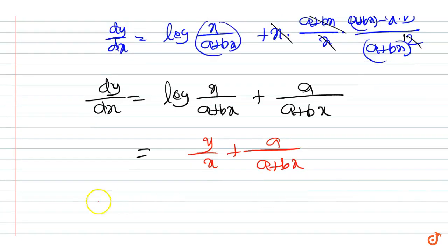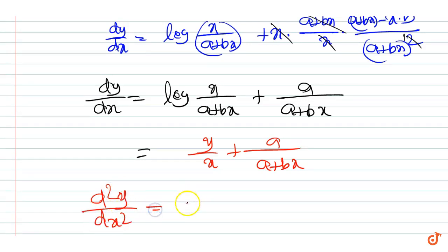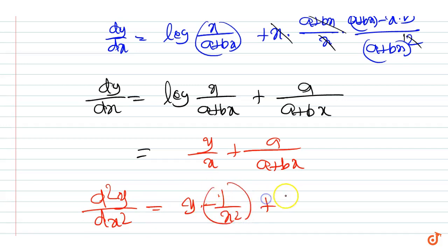Now, differentiating again we get d square y upon dx square is equal to y into minus 1 by x square plus 1 by x into dy by dx.